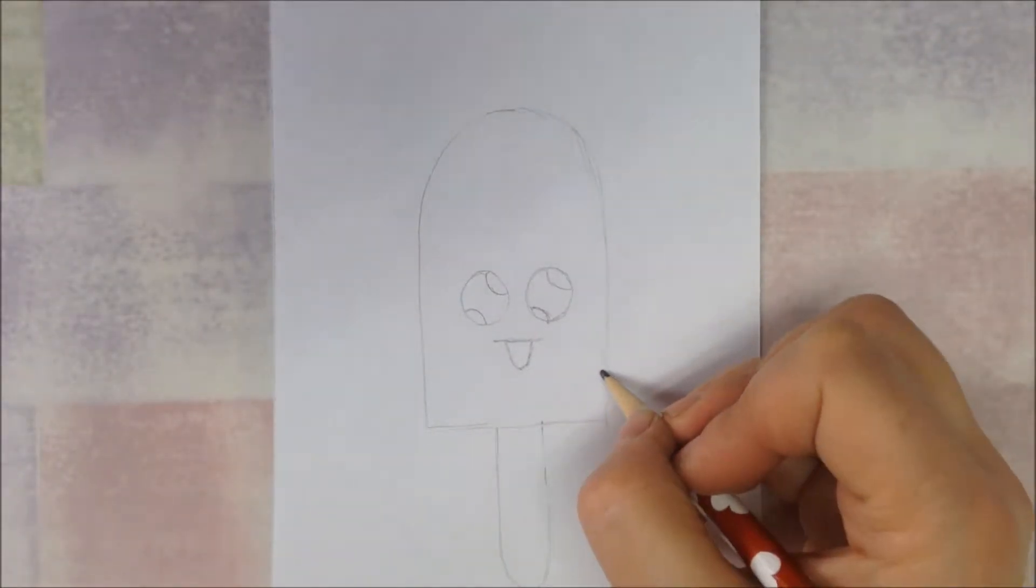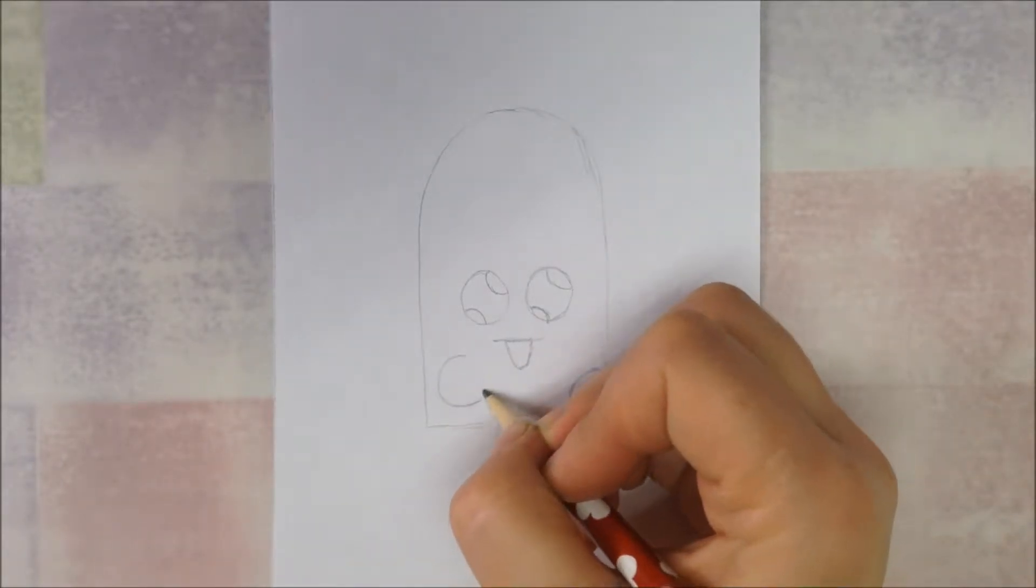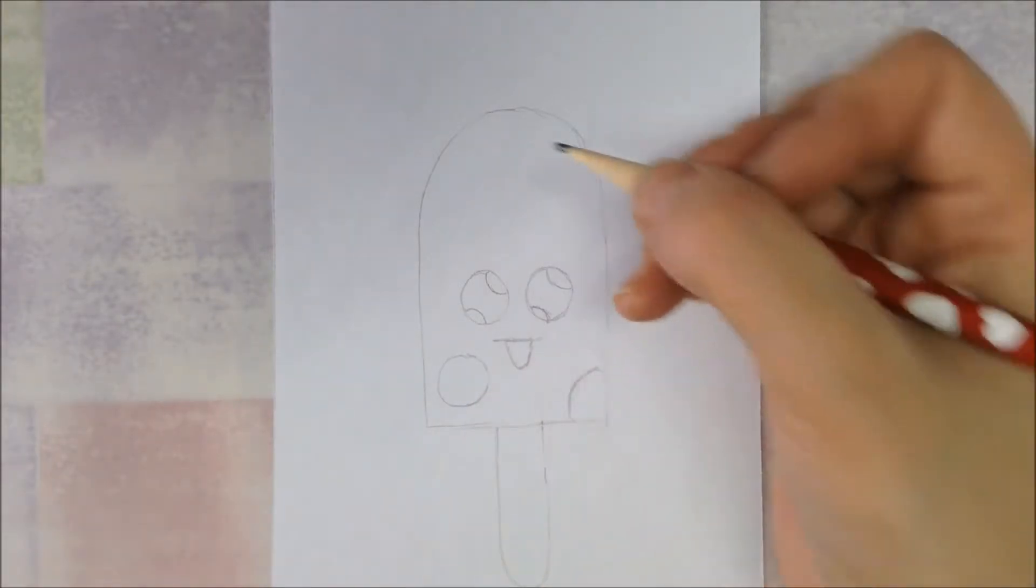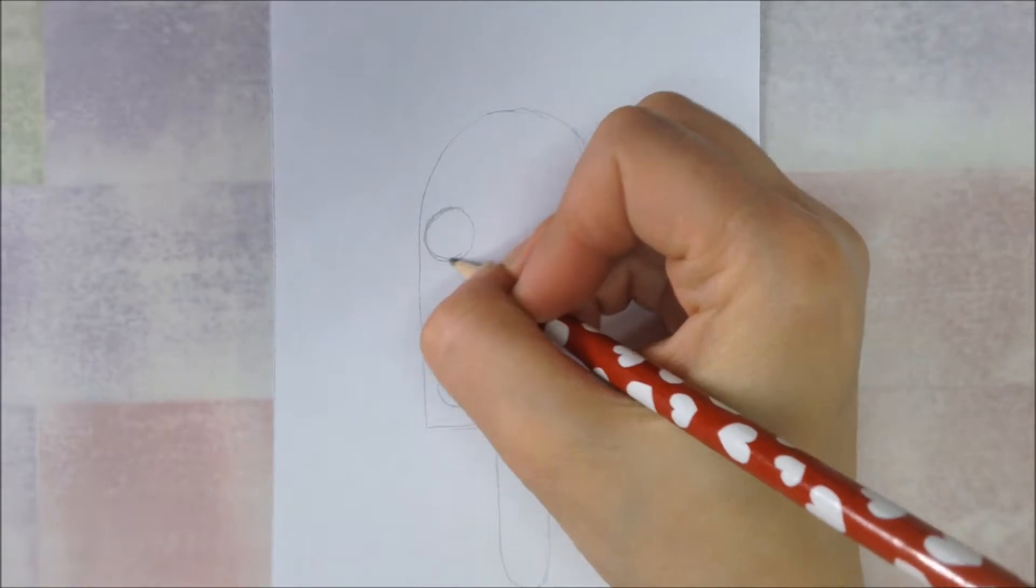Now to turn it into a ladybug we need spots, and we're going to draw circles for those. They're about the same size as the eyes, maybe a little bigger, maybe a little smaller. Just space them out where you think they look good.